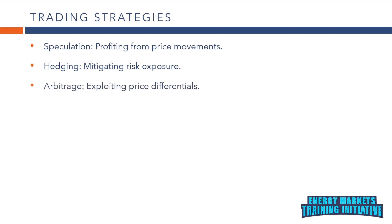Arbitrage: traders exploit price discrepancies between different markets or related energy products to make a profit. For example, they may buy low in one market and sell high in another to capture the price differential.